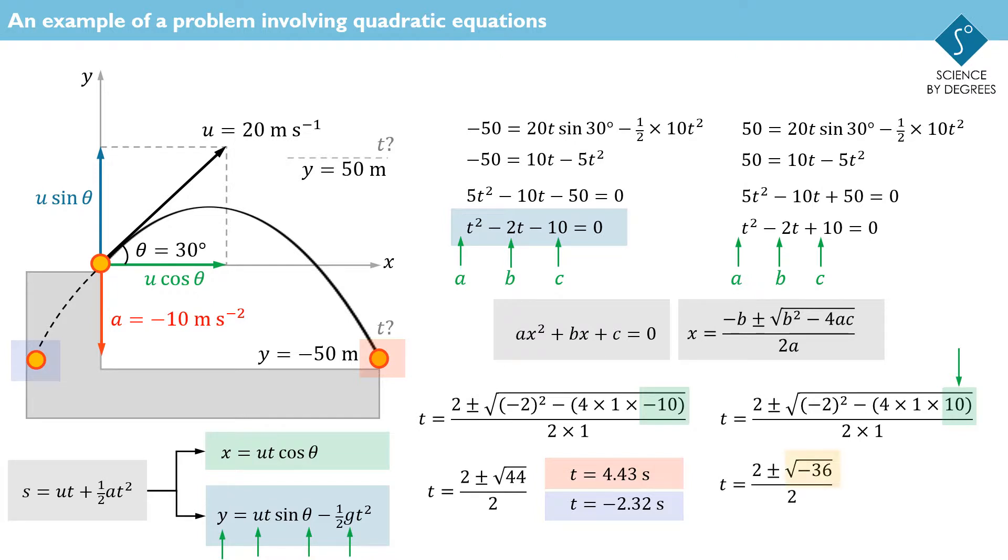To solve this equation requires the square root of negative 36, a number that when multiplied by itself gives negative 36. And there is no such real number, because all real squares are positive. This lack of a real solution has a physical meaning, too. There never was a time at which the object was 50 meters above its starting point, because its initial velocity was too small to allow it to reach that height.